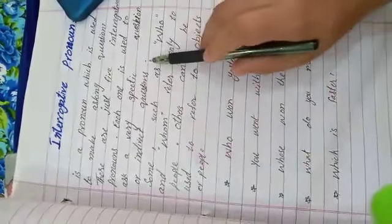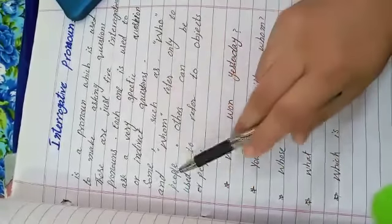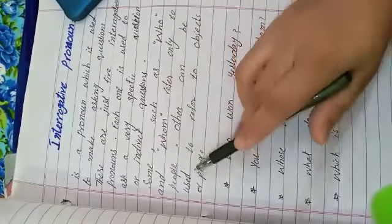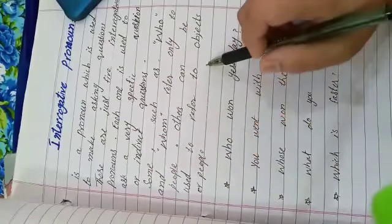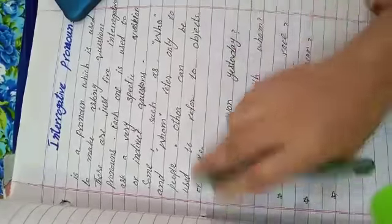They are used in specific questions and indirect questions. For example, who and whom refer only to people. Others can be used to refer to objects or people. Others are used for objects and people both.